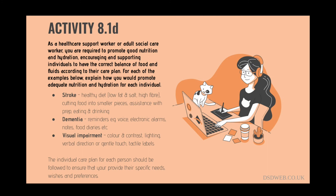The third individual has a visual impairment and requires assistance to maintain independence when preparing food, eating and drinking. As with all these individuals, you would work with them in line with their care plan. They may require voice direction or gentle touch to cook, eat and drink. They should be encouraged to do as much as they can for themselves to promote independence. Good lighting, colour and contrast can aid visibility, and tactile or braille labels and even talking equipment may also be useful.